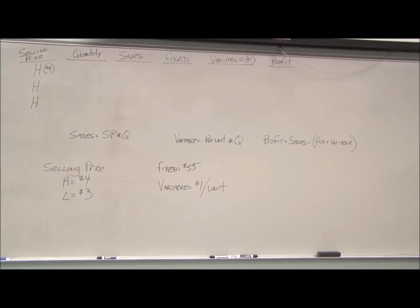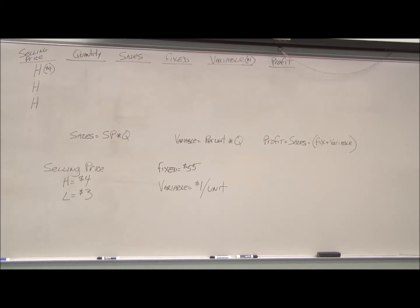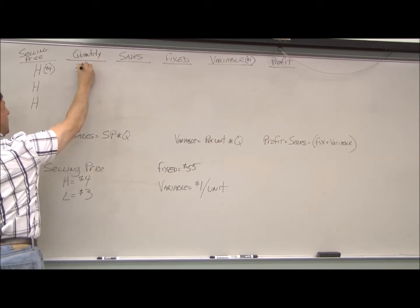Now we're going to take the profit equation and apply it to a market. You have this form - I want you to fill it out for four situations. The four situations vary depending on the selling price: if you sell high, it's $4; if you sell low, it's $3. I'm going to go through the first one. For the first scenario, everyone sells high.